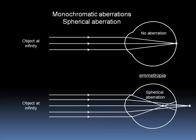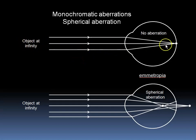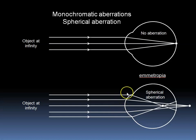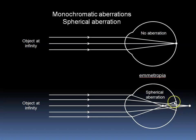Monochromatic aberrations occur even if there is only one wavelength of light. In this case, we show that an object at infinity without aberration is focused to a point on the retina. However, with spherical aberration, the peripheral part of the image undergoes more refraction than the central part, and we see that there is no one place where all the light is focused — there is a series of points and blur circles.